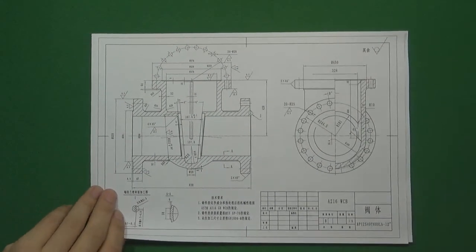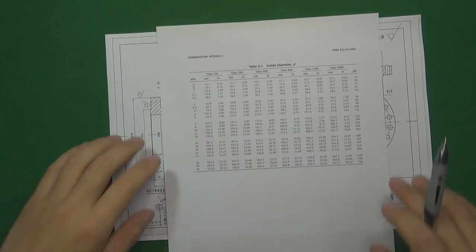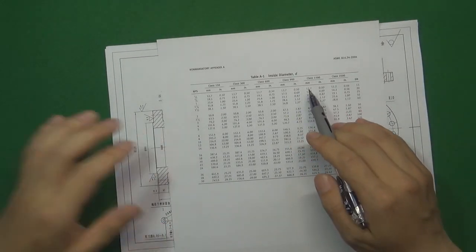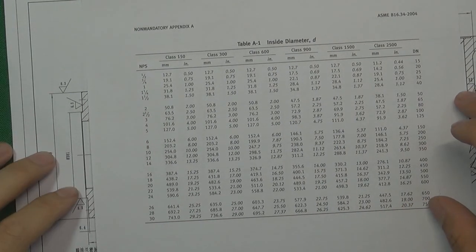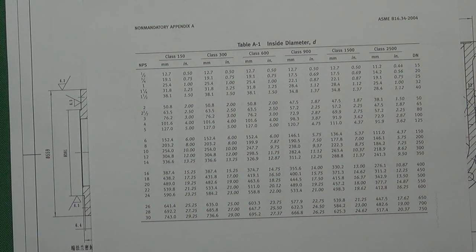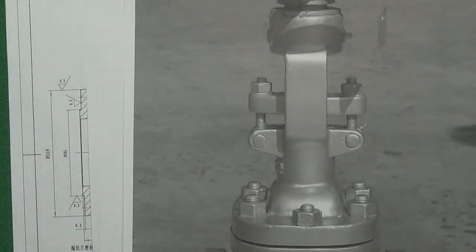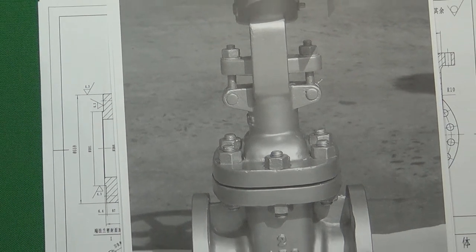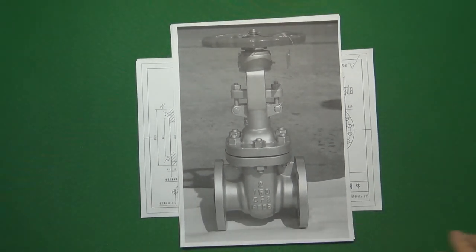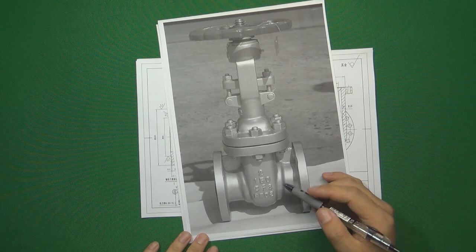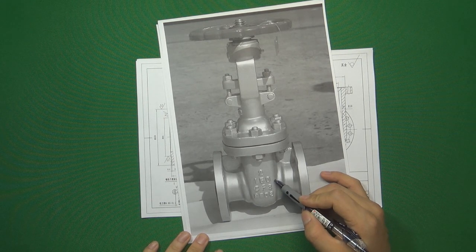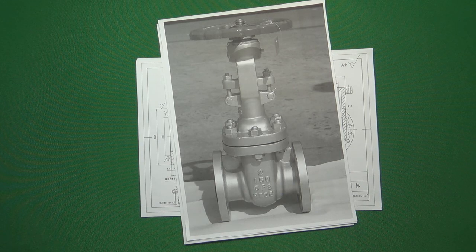So this is what we covered today — the inside diameter factor. Whether you are designing a valve or choosing a valve, if it is designed by ASME B16.34, you will know the real inside diameter. Next time we are going to talk about pressure. Thank you for watching. If you have any questions, please leave a comment. If you like this video, please subscribe. See you next video. Bye bye.